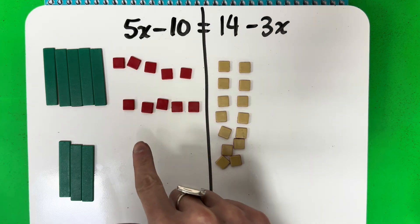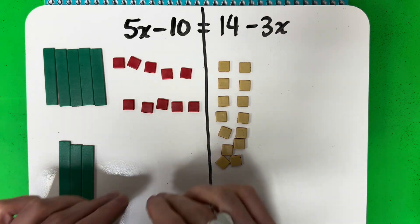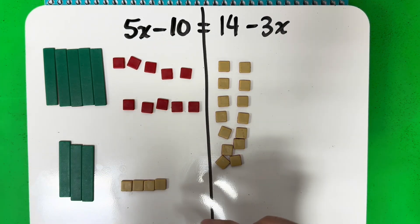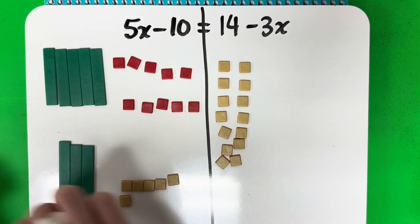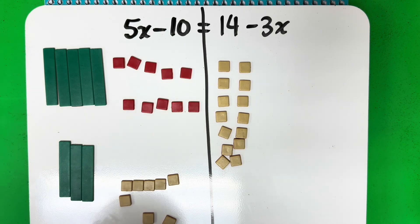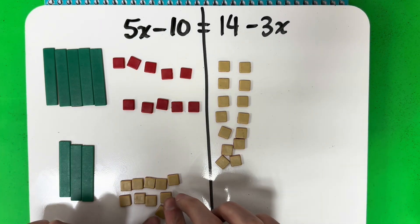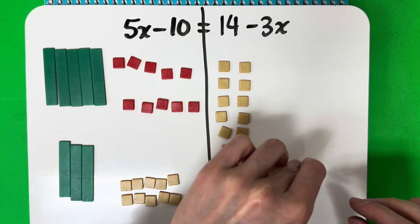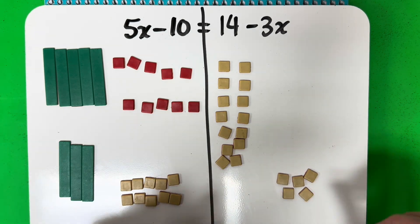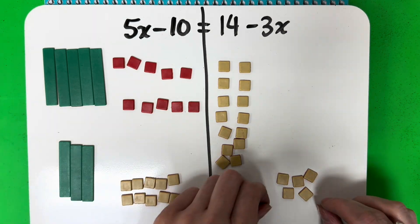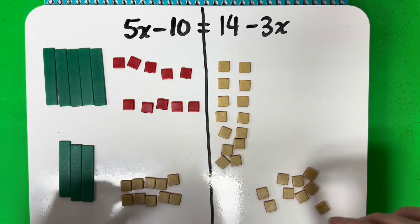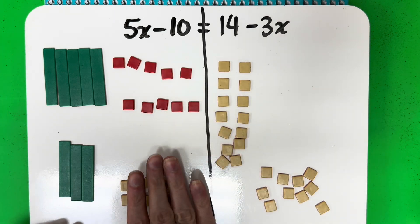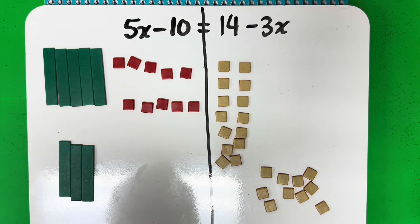Here I have negative 10, so to cancel that I need to put positive 10 — 10 yellows — and then 10 to the other side as well. These will cancel out — 10 minus 10 is a zero pair, they go away. Let me move them out of the way.